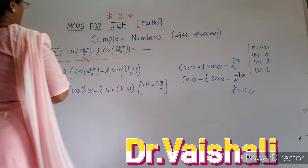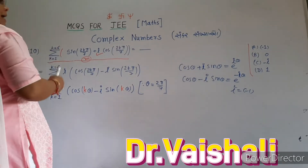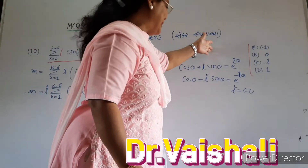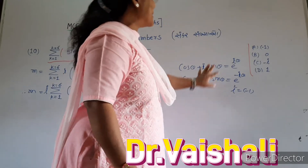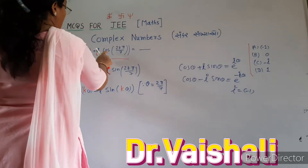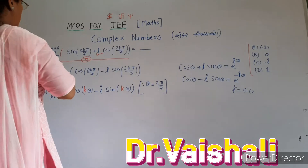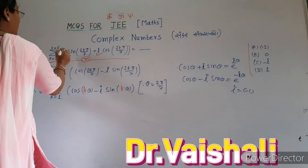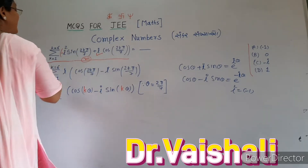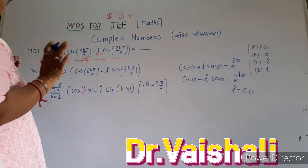So let's recall the formula. We know that cos θ + i sin θ equals e raised to iθ, and cos θ minus i sin θ equals e raised to minus iθ. Here, the sign of cos is positive and the sign of sine is minus. So minus minus will become plus.